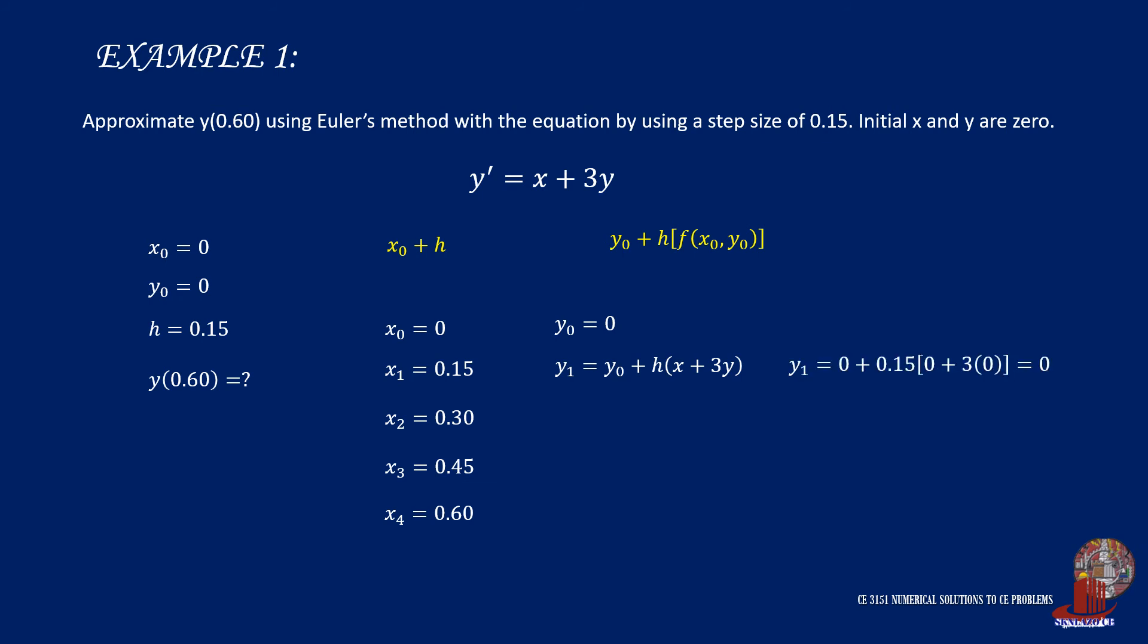That is y0 of 0 plus the step size of 0.15, and this is multiplied by x, which is 0, plus 3y, which is 3 times 0. That gives y1 a value of 0.